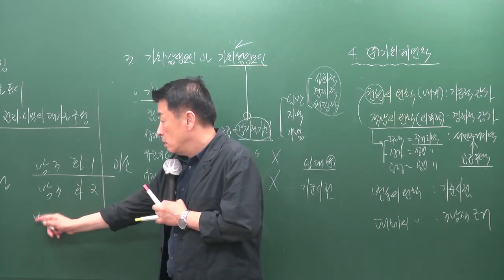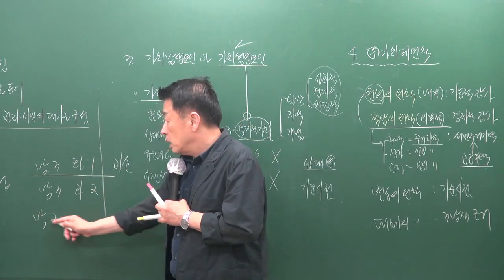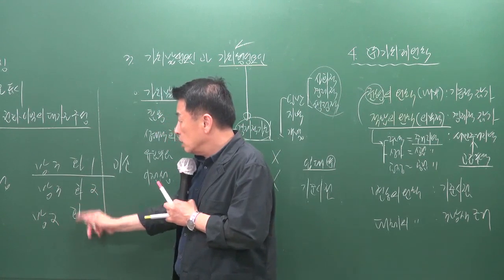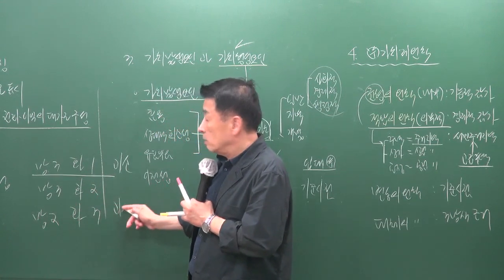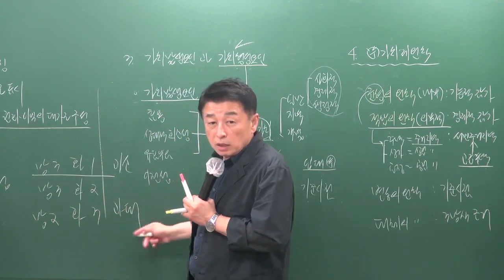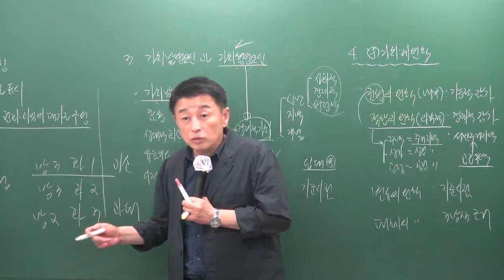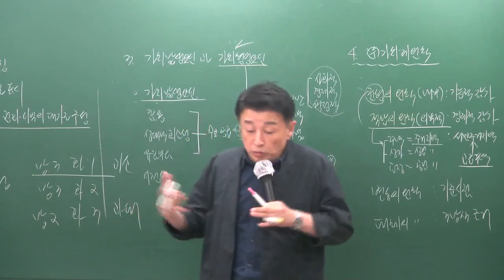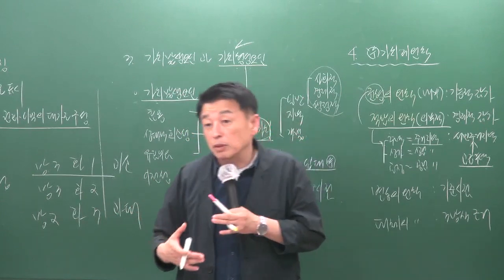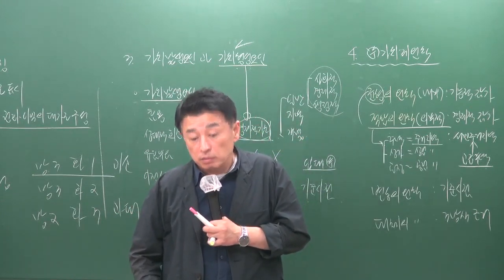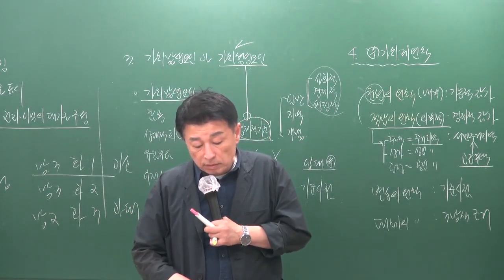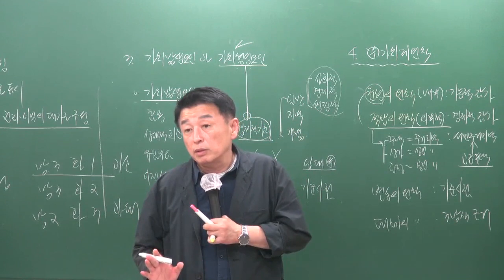반대로 방을 하나 줄이고 화장실을 하나 늘리는 것은 과대개량이 됩니다. 이것도 밸런스가 맞지 않는 경우이며, 이러한 경우에 감가를 적용합니다.